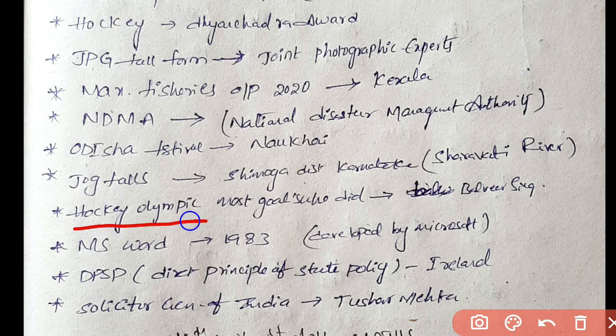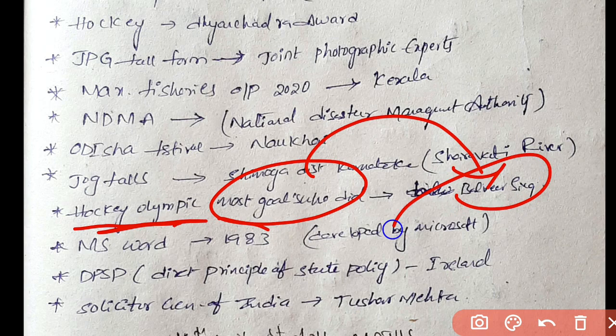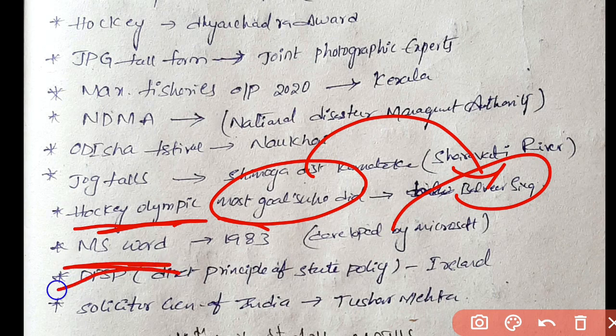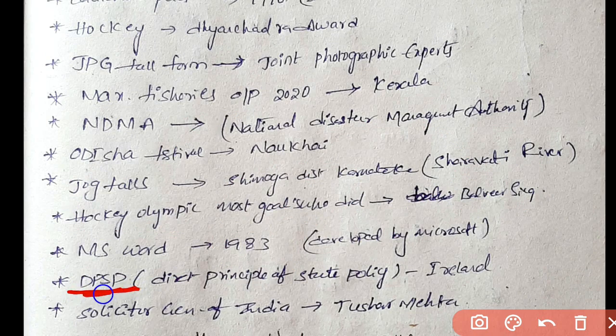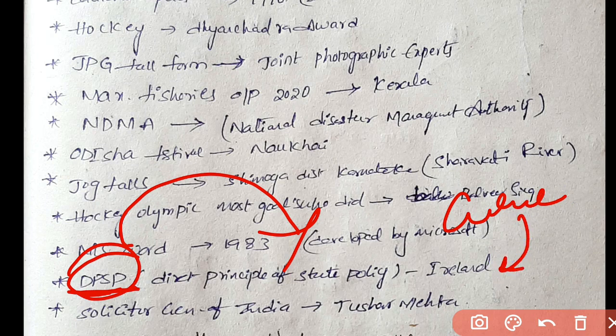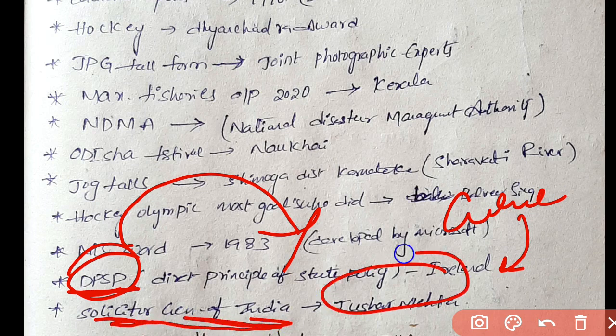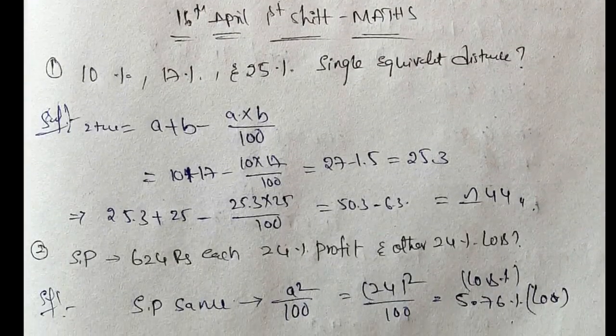Hockey Olympics, most goals ever scored by a person. The answer is Balbir Singh. MS Word was developed in 1983 by Microsoft. DPSP is Directive Principles of State Policy. We took DPSP from Ireland Constitution. Solicitor General of India is Tushar Mehta, Attorney General is K.K. Venugopal.